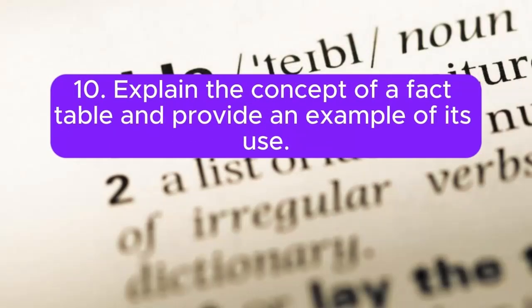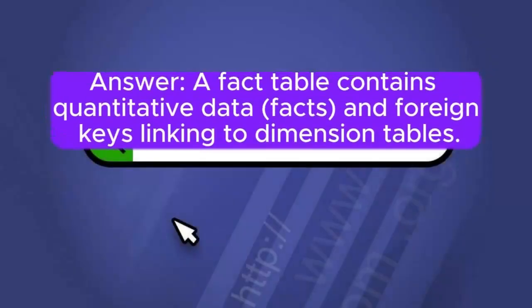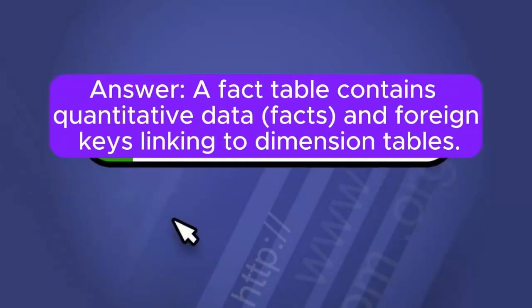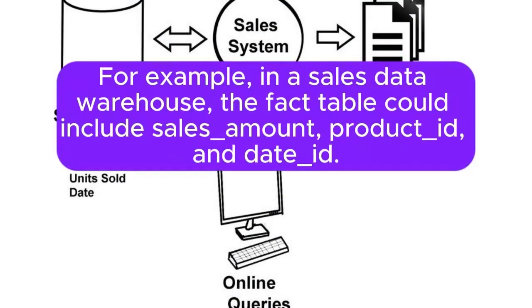Question 10: Explain the concept of a fact table and provide an example of its use. Answer: A fact table contains quantitative data (facts) and foreign keys linking to dimension tables. For example, in a sales data warehouse, the fact table could include sales amount, product ID, and date.